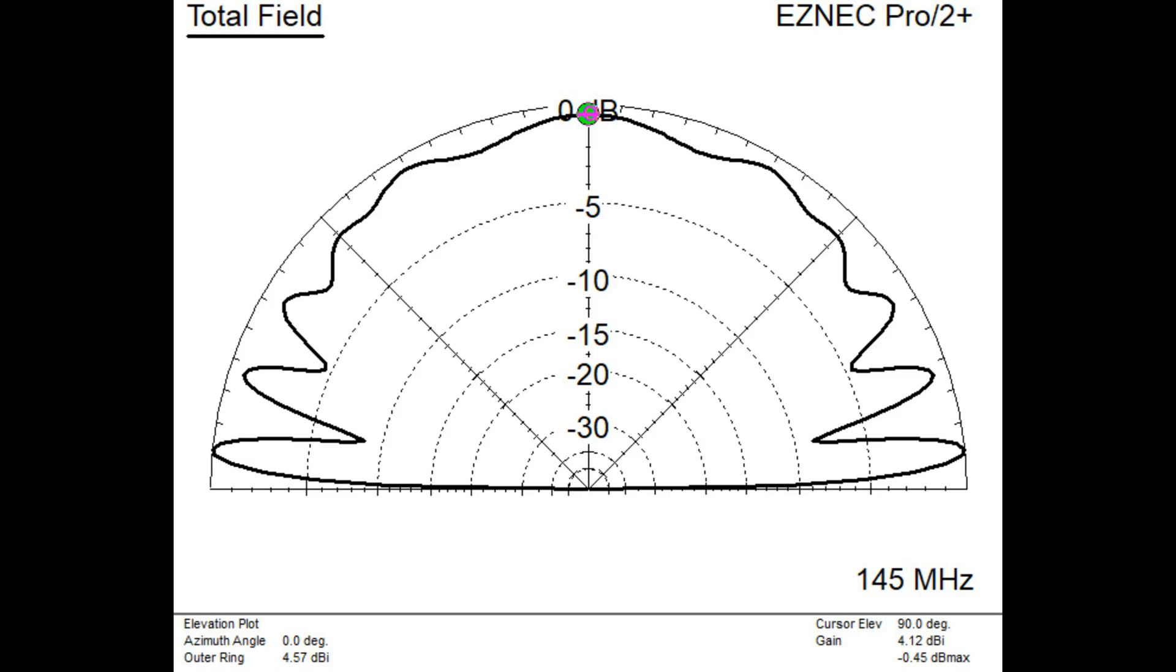A QFH antenna is reasonably compact and has a hemispherical pattern, as you can see from this elevation plot that I generated using the modeling program EZNEC. It's like a dome-shaped pattern over your location with similar gain in all directions. QFH antennas have a bit of gain, about 4 dB over isotropic. The theoretical gain would be 3 dB over isotropic since they only beam upward, but a QFH typically has a little bit less at the horizon and a little bit more overhead, giving you about 4 overhead.